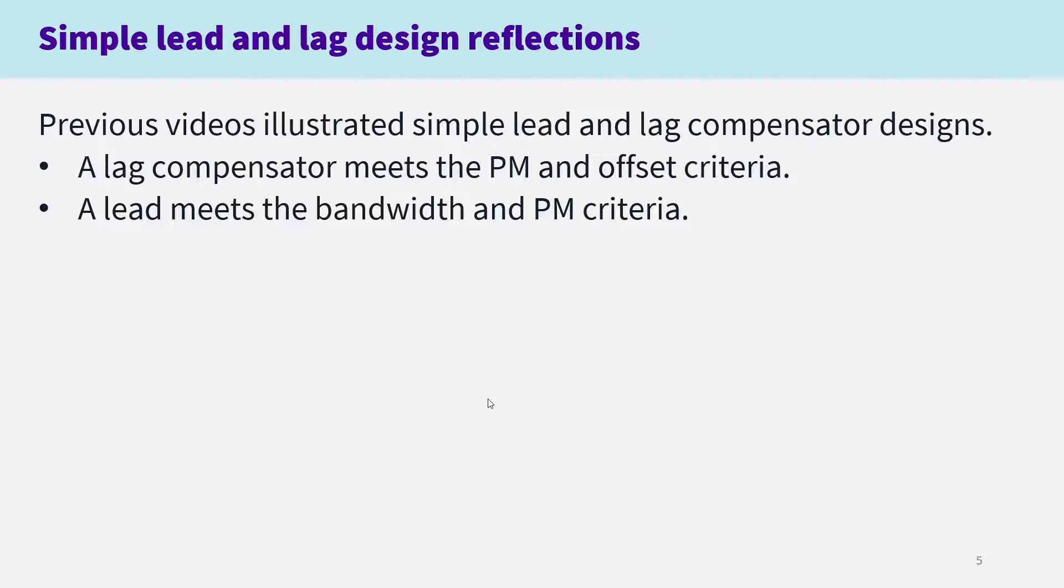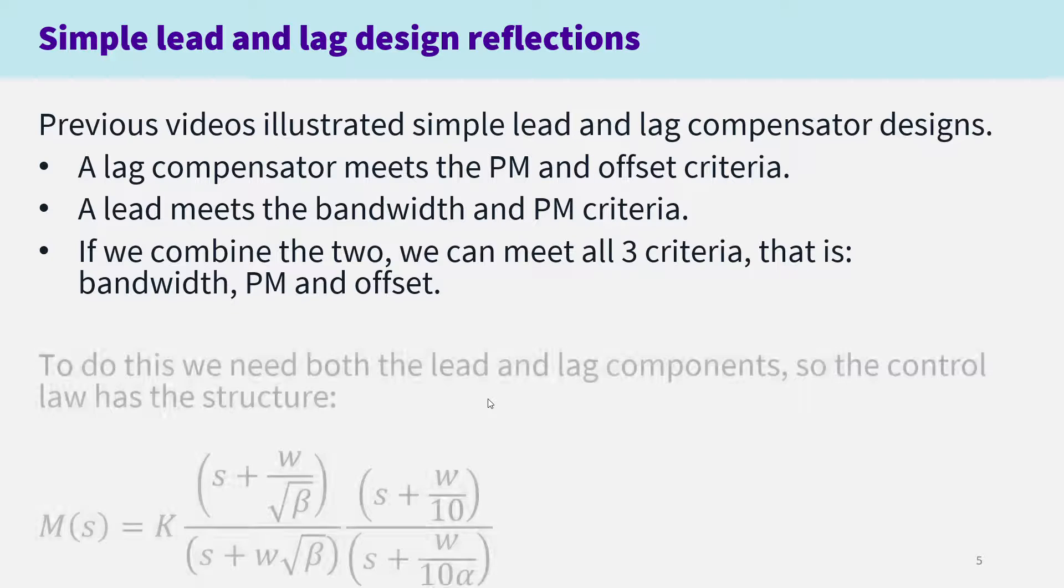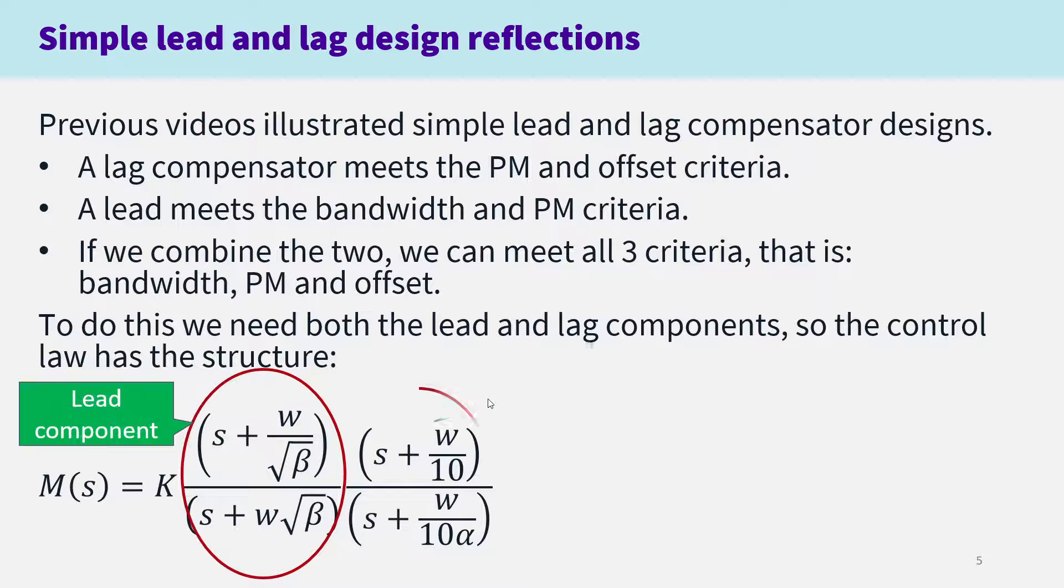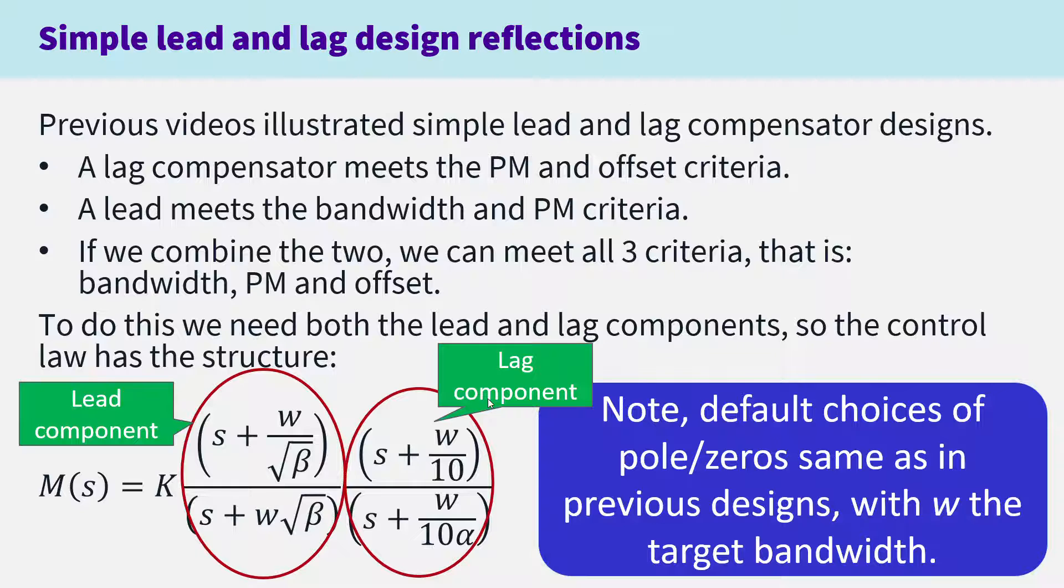Previous videos illustrate simple lead and lag compensator designs. The lag compensator meets the phase margin and offset criteria. The lead compensator meets the bandwidth and phase margin criteria. If we combine the two, we can meet all three criteria: bandwidth, phase margin, and offset. But to do this, we need both the lead and lag components in our compensator. The default choices of the poles and zeros are going to be the same as in the previous designs.